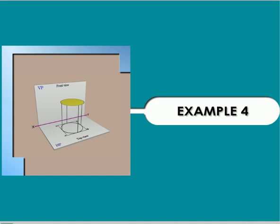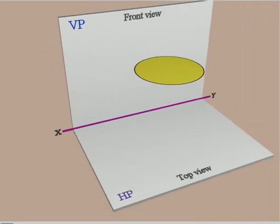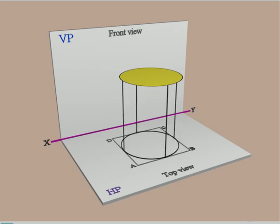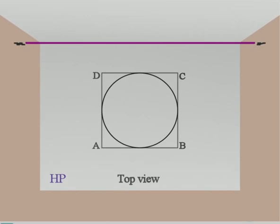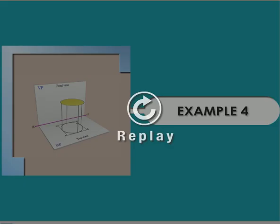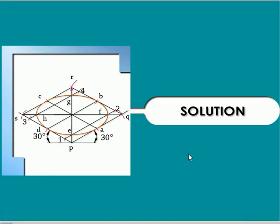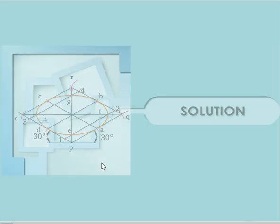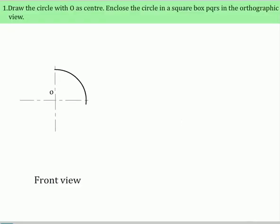Example problem. In this problem, the task is to draw the isometric view of a circle of diameter 50 mm using the method of points. The figure also shows the circle as a front view, enclosed in a box. Draw the circle with O as center and enclose the circle in a square box PQRS in the orthographic view.